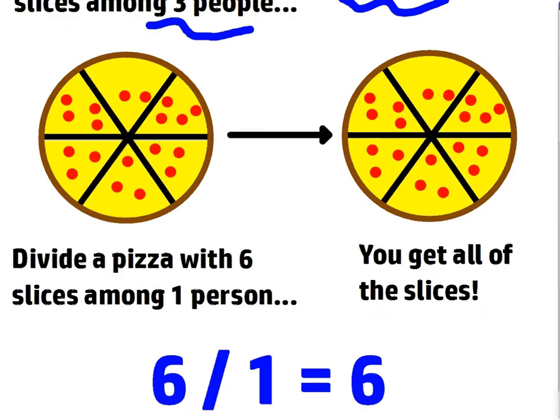And again, if you just divide it, basically just give it to yourself, then you get all the slices. The point, again, is in order to get all the slices, you can't share it with anybody. You have to only give it to yourself, which is the one right there.